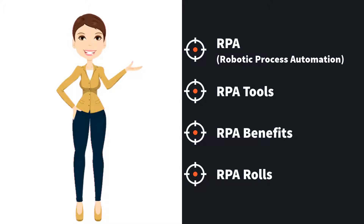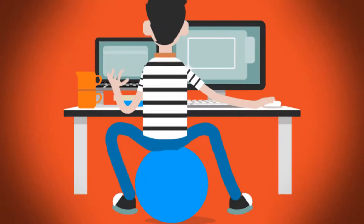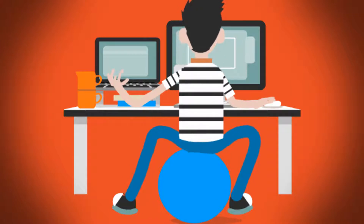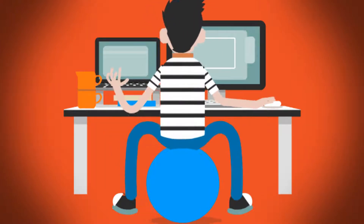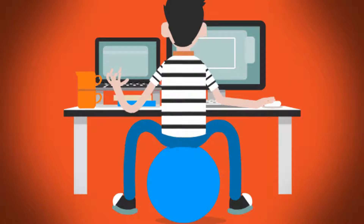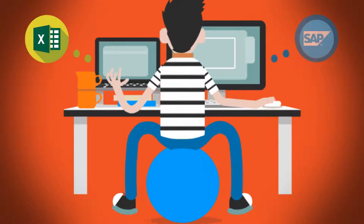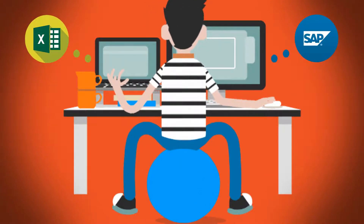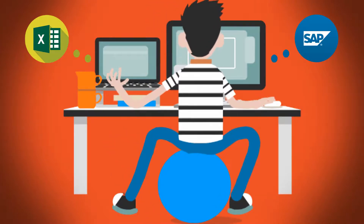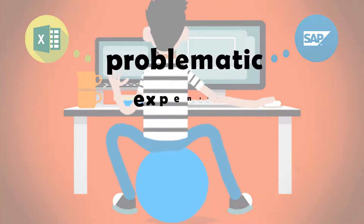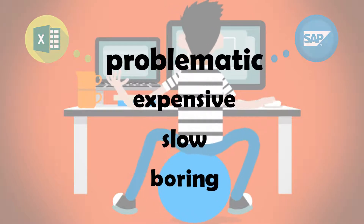To make the topic of Robotic Process Automation easy to understand, I have a small example for you. Do you know the Wheelchair Method? This is when employees manually transfer data from one system to another, like transferring data from an Excel file to an SAP system. All such tasks are routine tasks that consume a lot of time. These are problematic, expensive, slow, and boring.